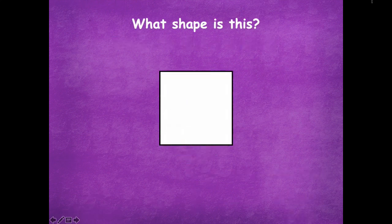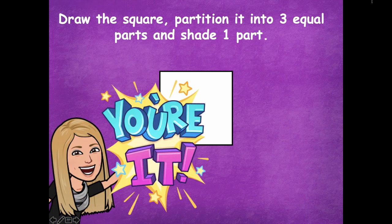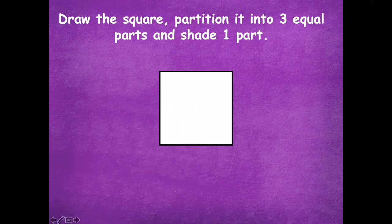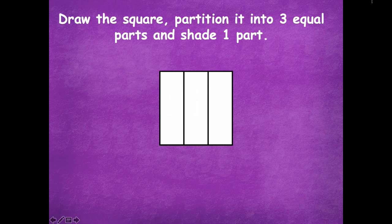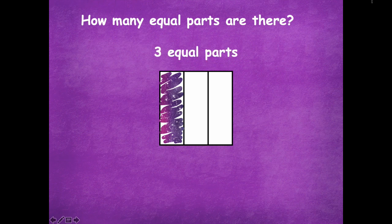Okay, so what's this shape? It's a square. Okay, so you're going to draw the square, partition it into three equal parts, and shade one part. And then pause the video, do that, and then click play when you're ready for the next step. All right, friends, make sure to pause if you need more time. Okay, so here I have partitioned my square into three equal parts, and I'm going to shade one part. So now I have some questions for you about this. So how many equal parts are there? Three equal parts.